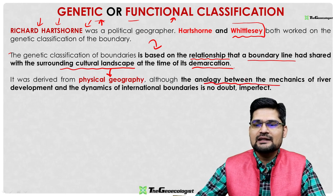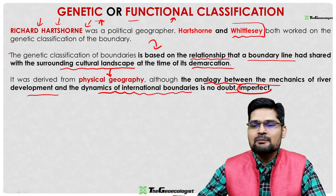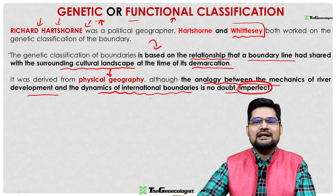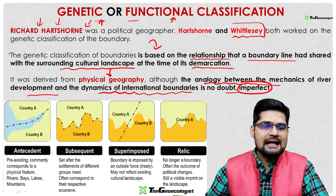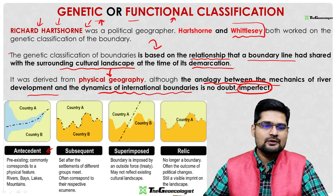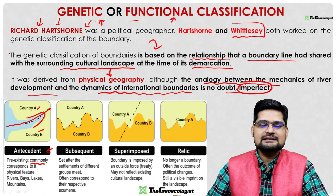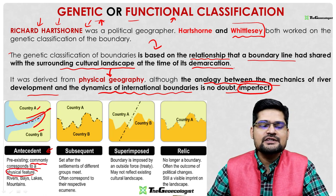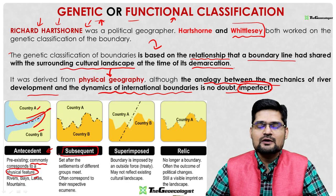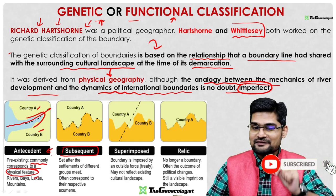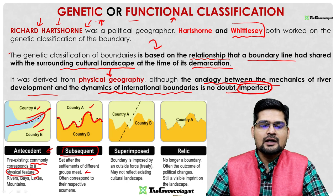The analogy between the mechanics of river development and the dynamics of international boundaries is admittedly imperfect, but it was drawn in this concept of boundary creation. The classification includes: antecedent boundaries, which pre-exist settlement and commonly correspond to physical features like rivers, bays, lakes, and mountains; and subsequent boundaries, where two different settlement groups are meeting — analogous to the subsequent stream concept.